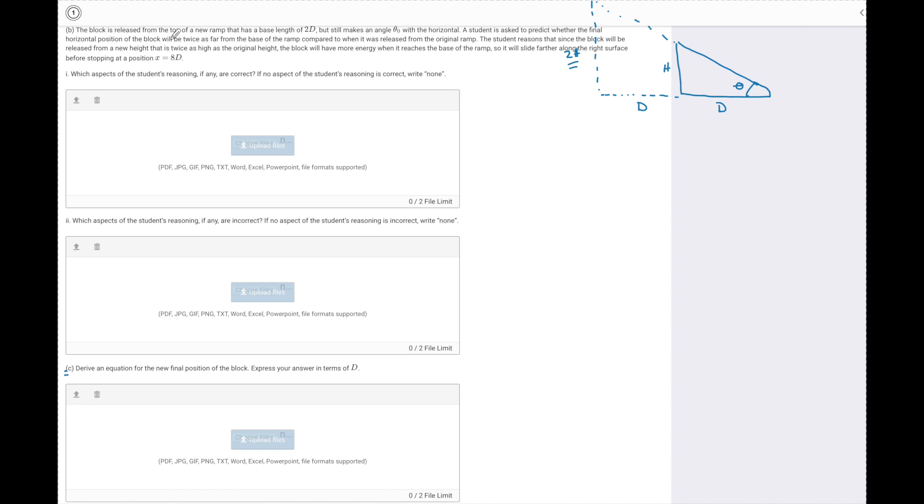A student is asked to predict whether the final position of the block will be twice as far from when it was released on the original ramp. When I went on the original ramp, it slid out to 4D. The student's saying if I drop from up here, now it's going to go to 8D. The student reasons that since the block will be released from a new height twice the original height, the block will have more energy when it reaches the base, so it will slide further before stopping at 8D. They want to know what, if anything, is correct about this statement. There are two things that are correct: the student is right that the new height will be 2H therefore it will have more energy, and they're also right that this new energy will make it slide to 8D.